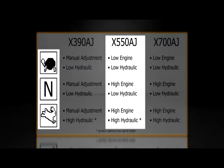For the X550AJ, it may have the optional two-speed hydraulic motor. If it does, turtle means low engine and low hydraulic speed, N means high engine and low hydraulic speed, and rabbit means high engine and high hydraulic speed.